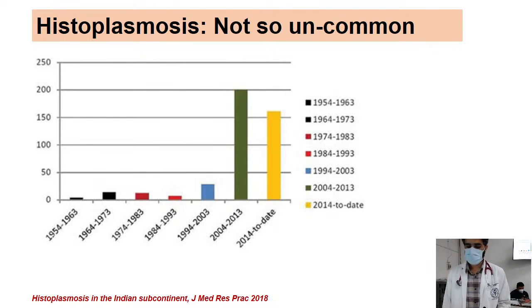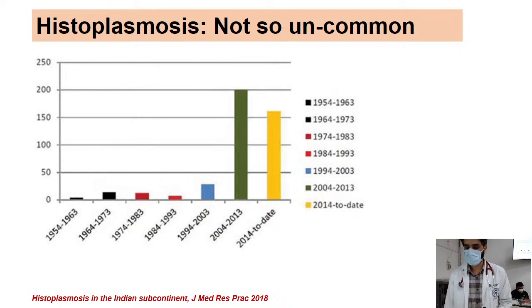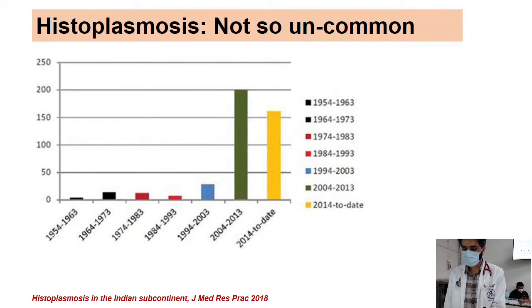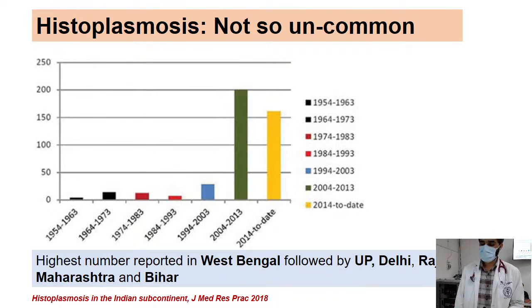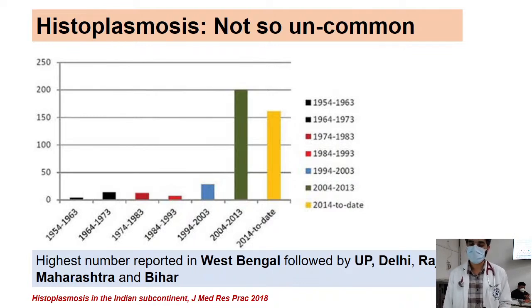Decade-wide data from India showed that the first case report was published in 1954. There was a large jump in cases from 2004, with a huge rise from 2004 to 2013. Until 2018, around 386 cases had been published in India, with the majority from 2014 onwards. The highest number was reported from West Bengal, followed by UP, Delhi, Rajasthan, Maharashtra, and Bihar, with cases now also reported from South and Eastern India.